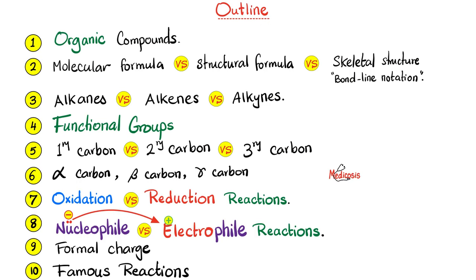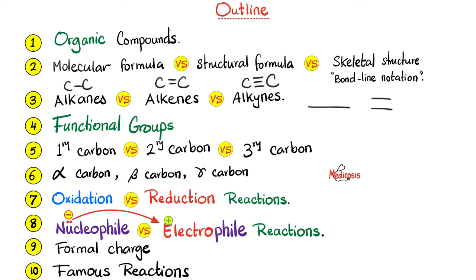Today's topics: organic compounds versus inorganic compounds; molecular formula versus structural formula versus condensed structural formula versus skeletal structure (bond-line notation); alkanes versus alkenes versus alkynes. Alkanes have a single bond between carbon and carbon. Alkenes have a double bond. Alkynes have a triple bond. The single bond is the longest but also the weakest. The double bond is shorter but stronger. The triple bond is the shortest but the strongest.